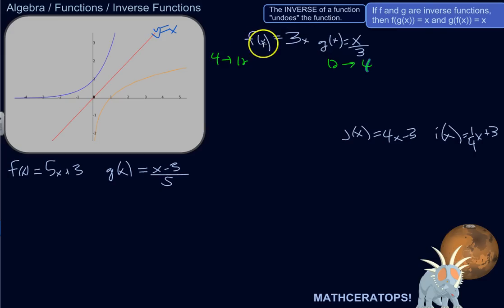So we can show this more formally like this. f of g of x is x. So let's do f of g of x. What that means is, f of x is 3 times x. But my x here is not going to be just x. It's going to be g of x. So I'm going to plug in this whole function in for x. I'm going to take g of x, which is x over 3, and plug it in for x here.